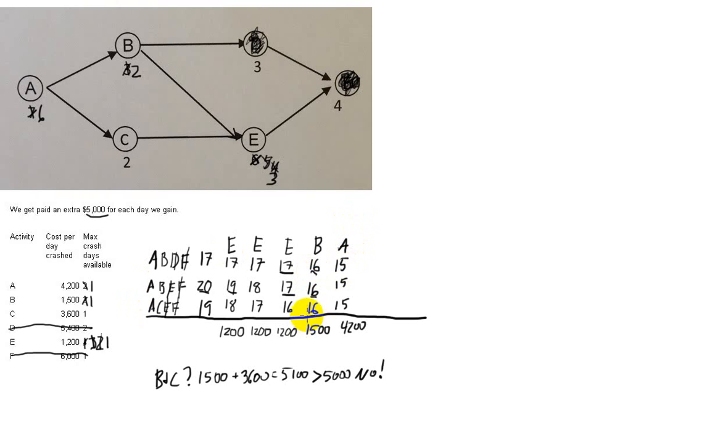They're all critical. So the only way we can speed them all up is to do the same thing and crash A. Now anything with an A is down to 14 days. But they all have A's in them, so they all go down to 14 days.